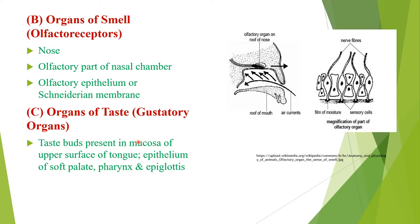Next is the organ of taste, also called gustatory organs. Taste buds are mainly present in the mucosa of the upper surface of the tongue, epithelium of the soft palate, pharynx, and epiglottis.